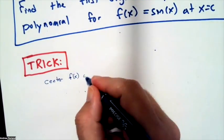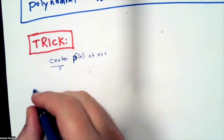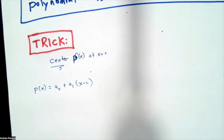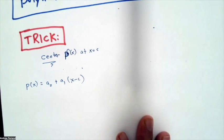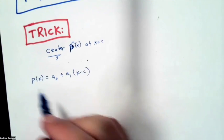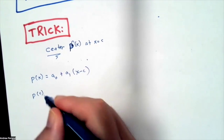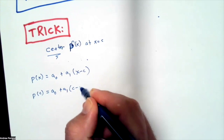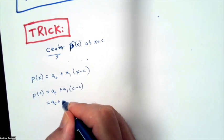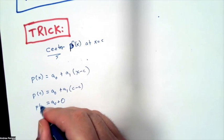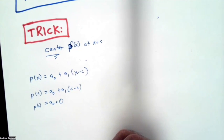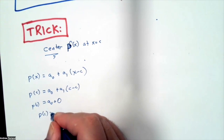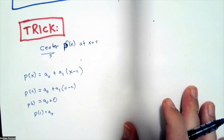And the trick is I'm going to center the function at x equals c. So I'm going to write p of x is equal to a sub zero plus a sub one times x minus c. And by writing x minus c, now I have the situation where if I plug in c, I get a sub zero plus a sub one times c minus c, which means that my p of c is just a sub zero plus zero. My p of c is equal to a sub zero, and that's actually a lot cleaner.